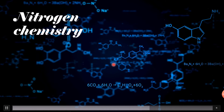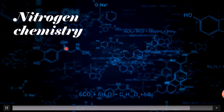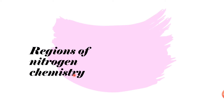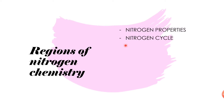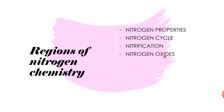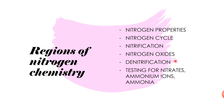Today's video is on nitrogen chemistry. The regions we're going to be looking at include nitrogen properties, the nitrogen cycle, nitrification as a process within the nitrogen cycle, types of nitrogen oxides and how denitrification can form these nitrogen oxides, and then testing for nitrate ions, ammonium ions, and ammonia gas.